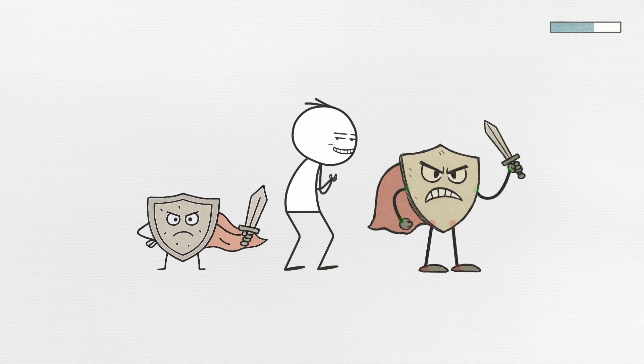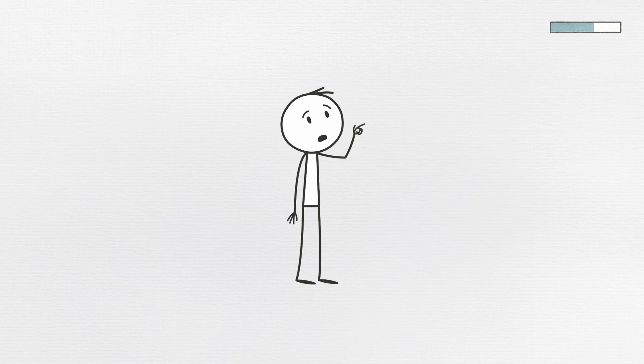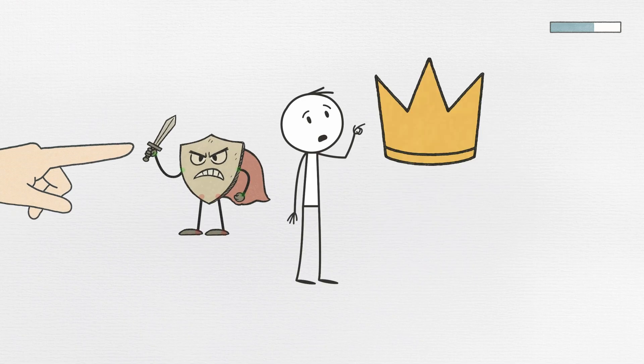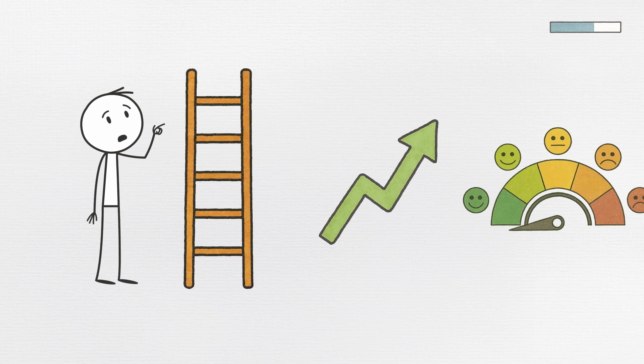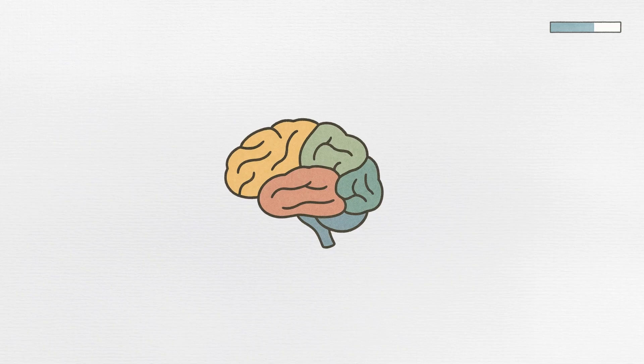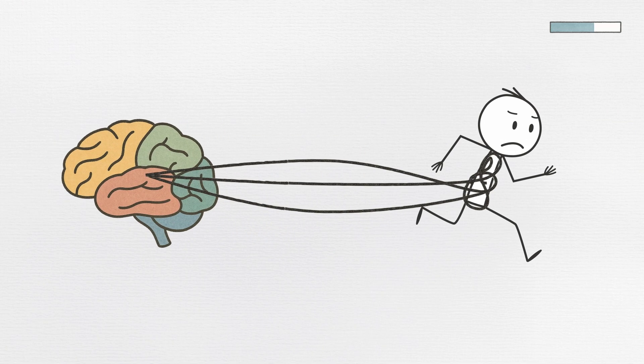The cruel twist is that this protection comes at the cost of ever actually achieving anything. You stay safe from criticism, but you also stay safe from success, growth, and the satisfaction of completion. Your perfectionist brain thinks it's being helpful, but it's actually holding you hostage.